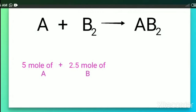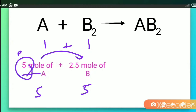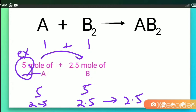Next case: 5 moles of A and 2.5 moles of B2 are given. According to the equation, 1 mole of A reacts with 1 mole of B2, so 5 moles of A would need 5 moles of B2. But only 2.5 moles of B2 are present. Therefore only 2.5 moles of A can react with 2.5 moles of B2 to give 2.5 moles of AB2. B2 is the limiting reagent and A is in excess.